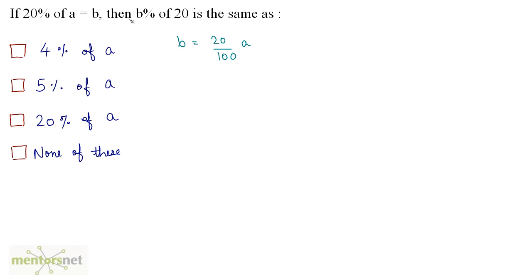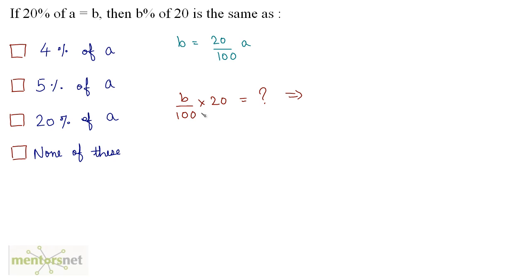Now we have been asked: B% of 20 is the same as? So B% of 20 can be written as B upon 100 times 20. So this is equal to — let's put the value of B here.